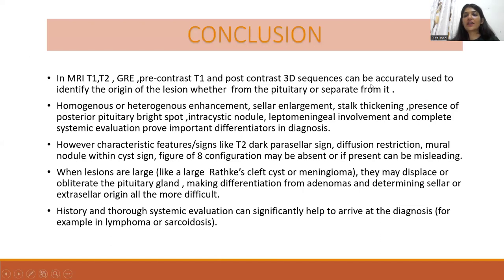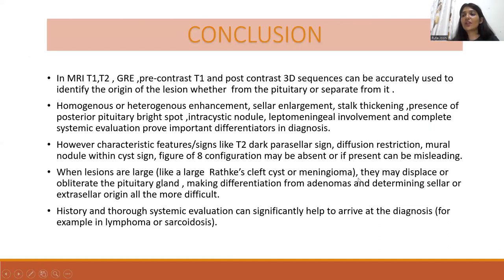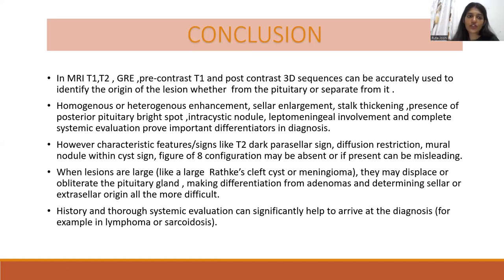In conclusion, MRI can be accurately used to identify the origin of the lesion — whether it is coming from the pituitary or separate. The type of enhancement, enlargement of the sella, stalk thickening, presence of the bright spot, intracystic nodule, leptomeningeal enhancement, and complete systemic evaluation are important differentiators in diagnosis. Classic features like T2 dark sign, diffusion restriction, nodule-in-cyst sign, and figure-of-eight appearance may be absent, or even if present, can be misleading. When lesions are large, like Rathke's cleft cysts or meningioma, they may displace or obliterate the gland itself, making differentiation from adenomas difficult. History is of prime importance in arriving at the diagnosis.